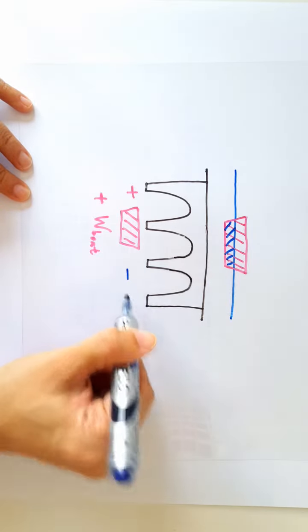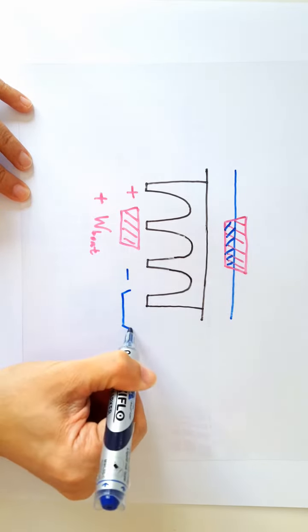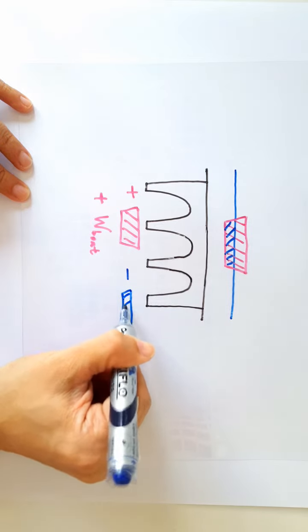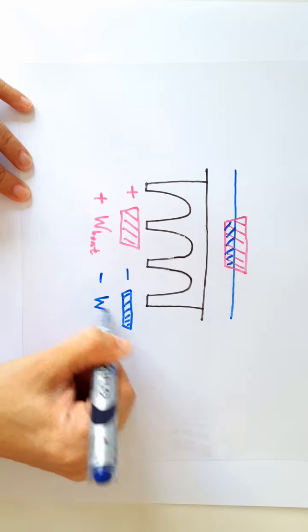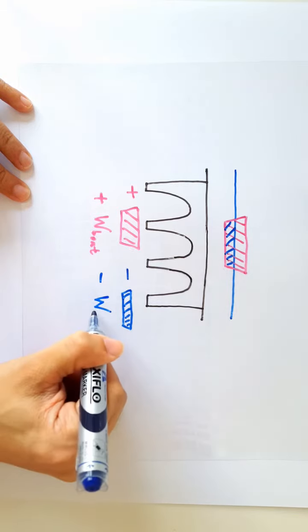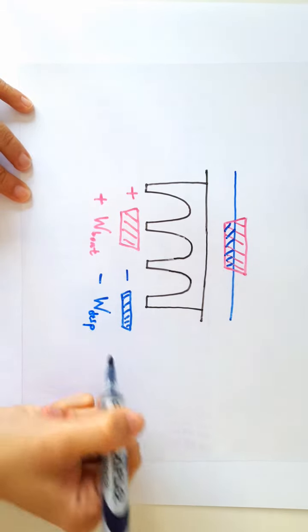So the bridge now has to support less weight of the water. So let me write it here. Let's subtract away the weight of the water that has been displaced.